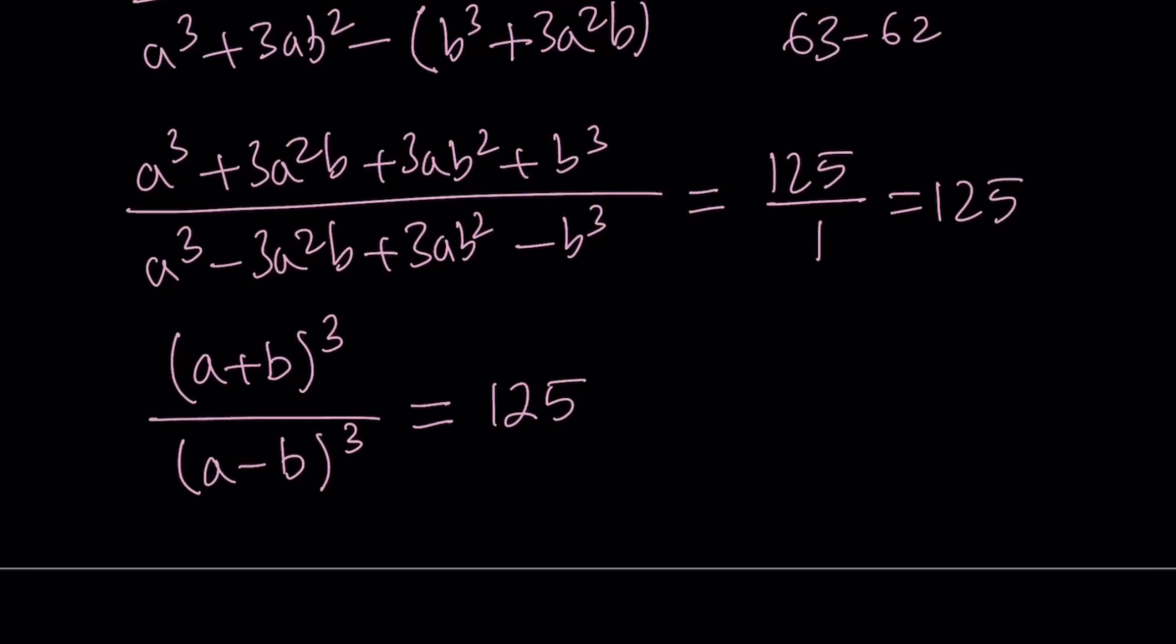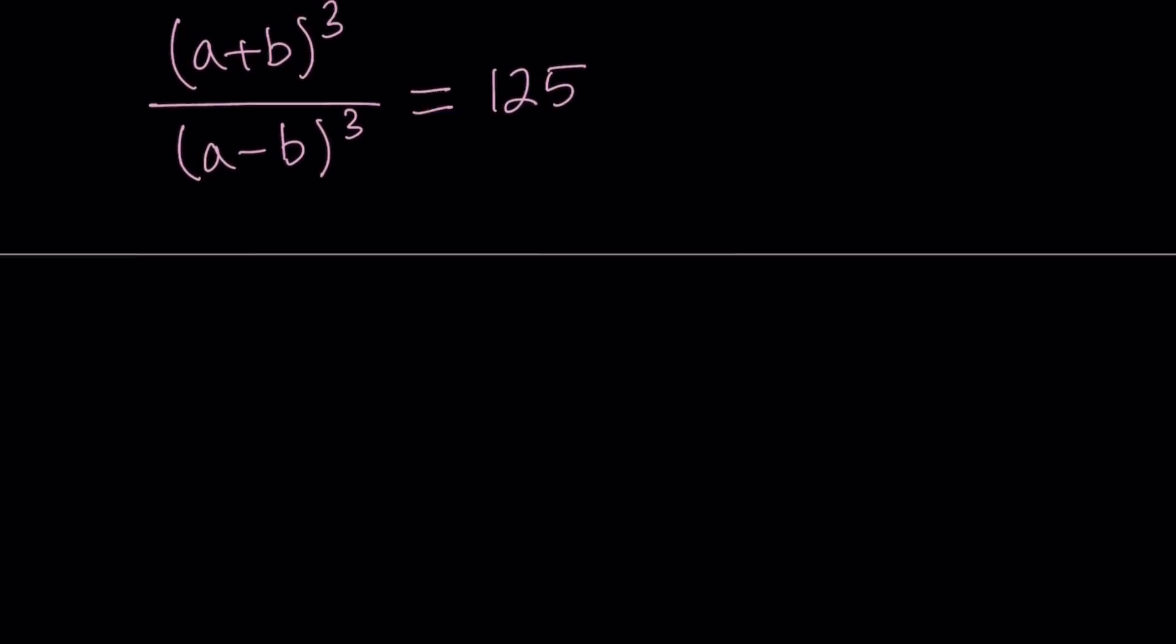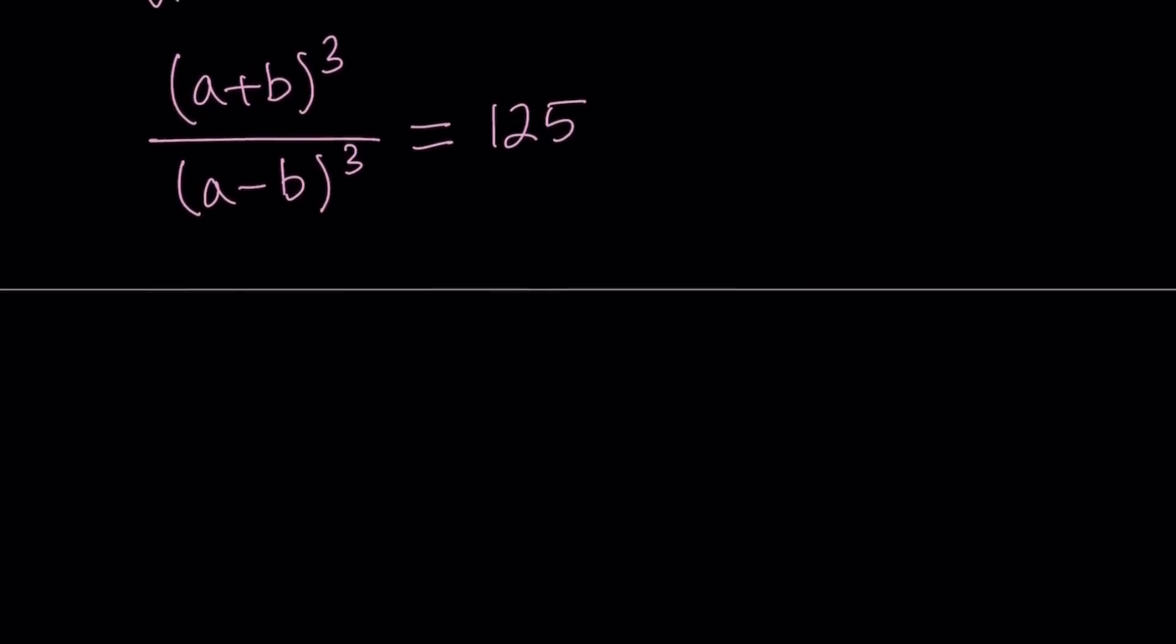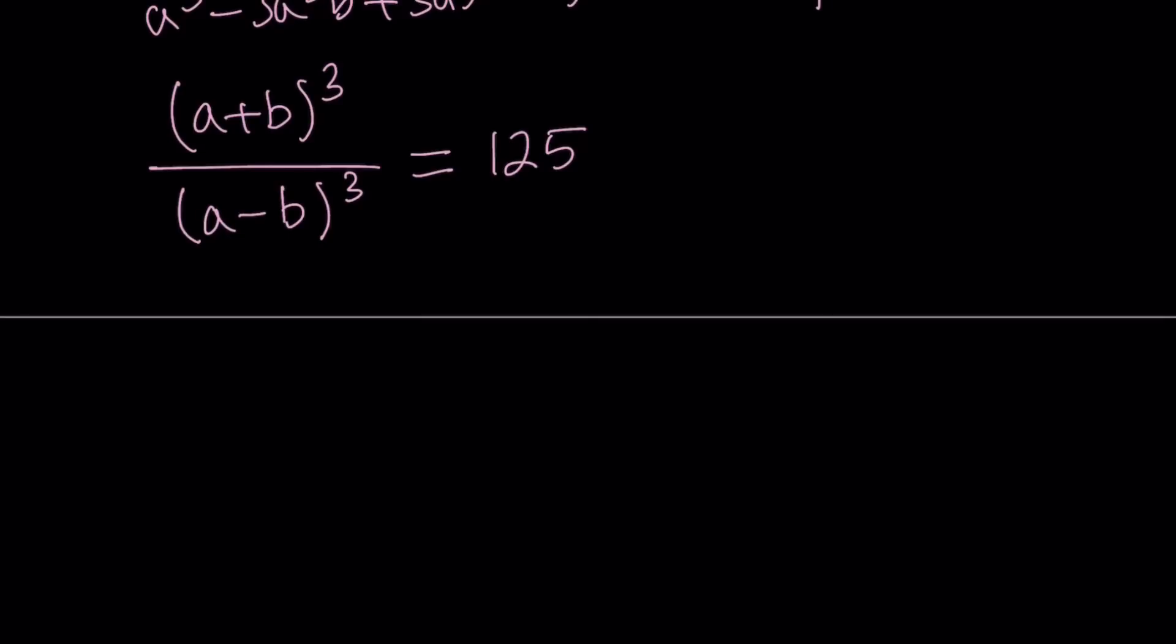Awesome. Now, at this point, we can go ahead and cube root both sides. But let's go ahead and take advantage of a property of exponents. So if you have something cubed divided by another thing cubed, like, you know, m cubed over n cubed, you can basically write it as m over n cubed, right? So let's go ahead and do the same thing here.